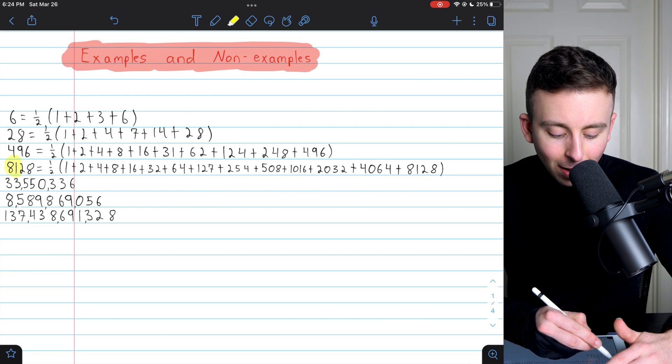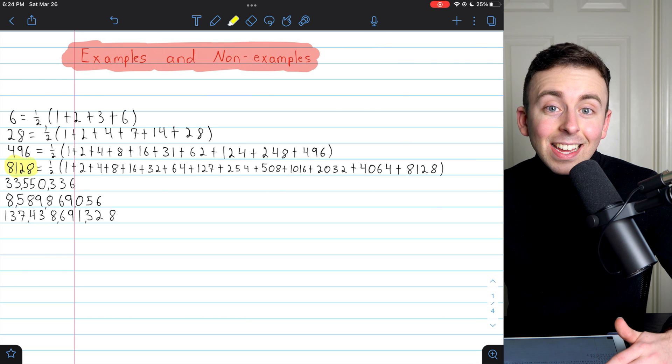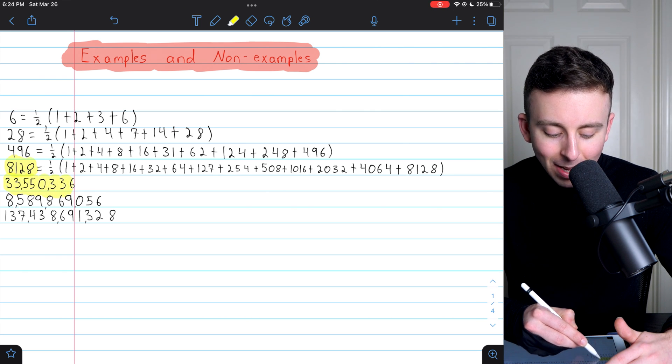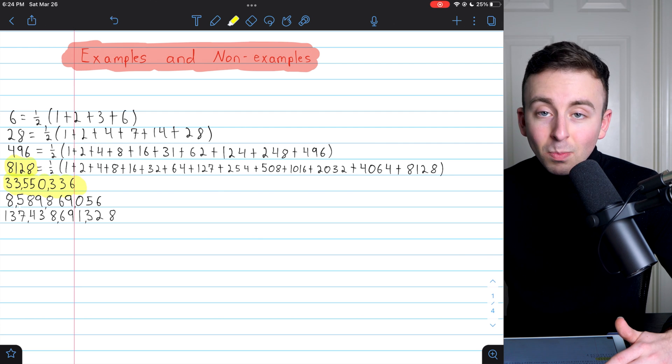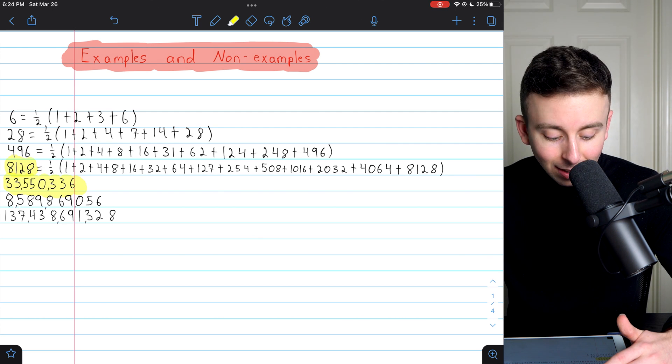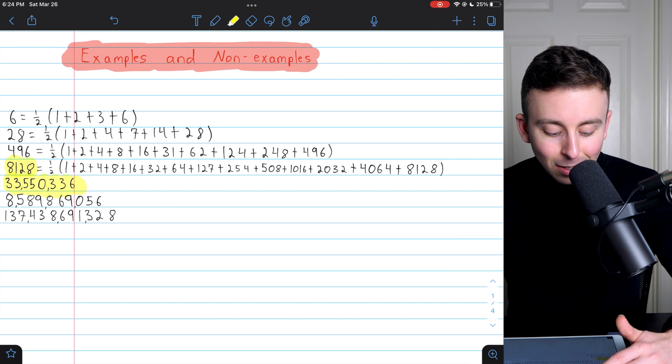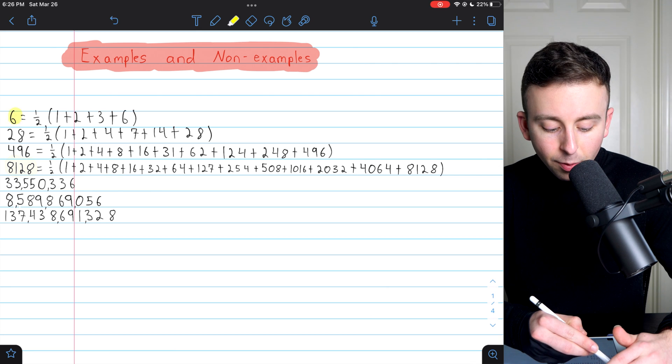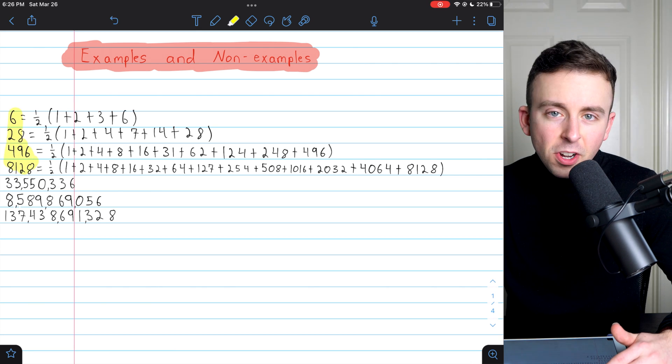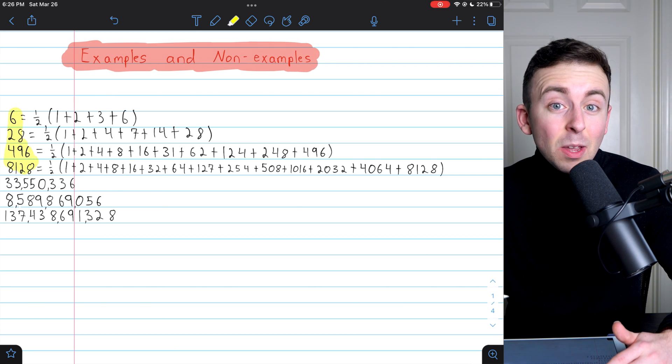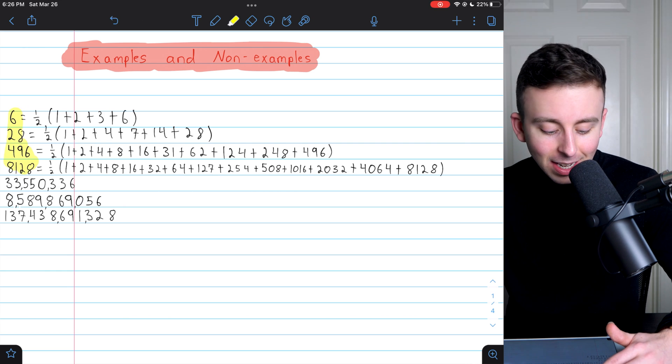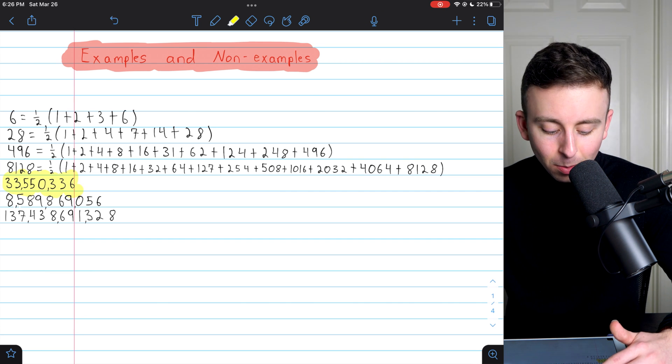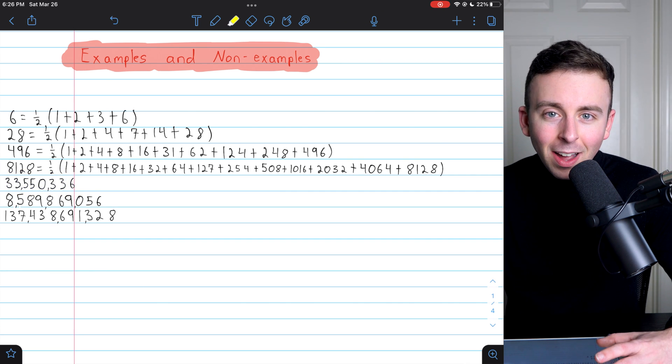You can see after 8,128, there wasn't another perfect number until over 33 million. So there was no 5-digit perfect number, and no 6-digit perfect number, and no 7-digit perfect number. So that was not true either. While the first four perfect numbers were known during ancient times, it wasn't until the mid-15th century that somebody discovered the next perfect number. So, pretty tough to find these guys.